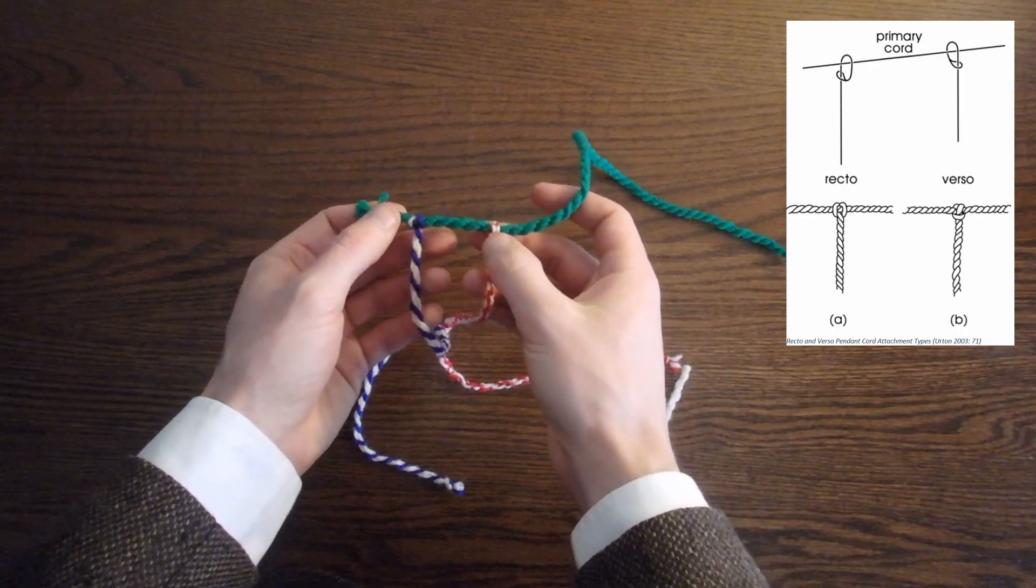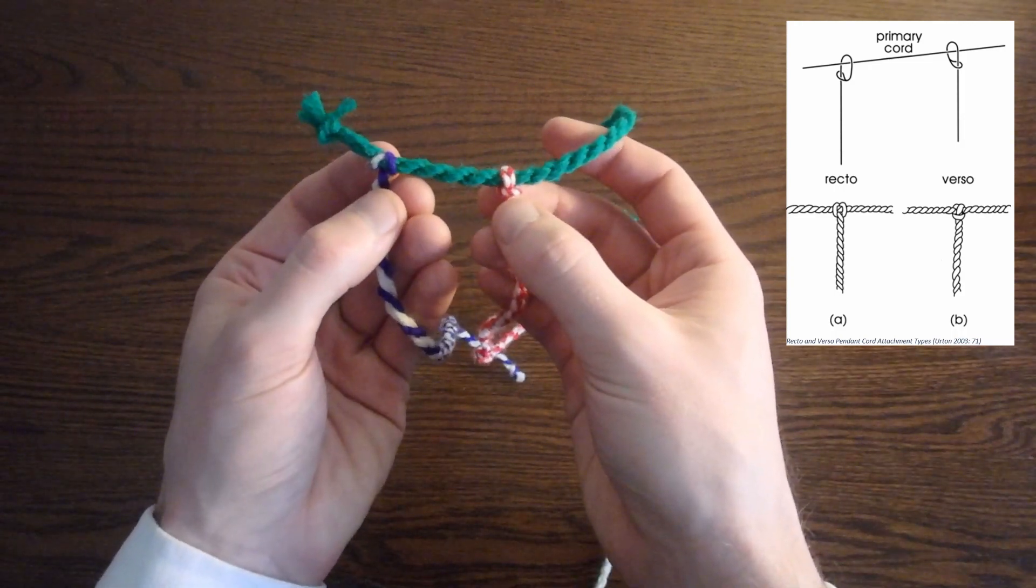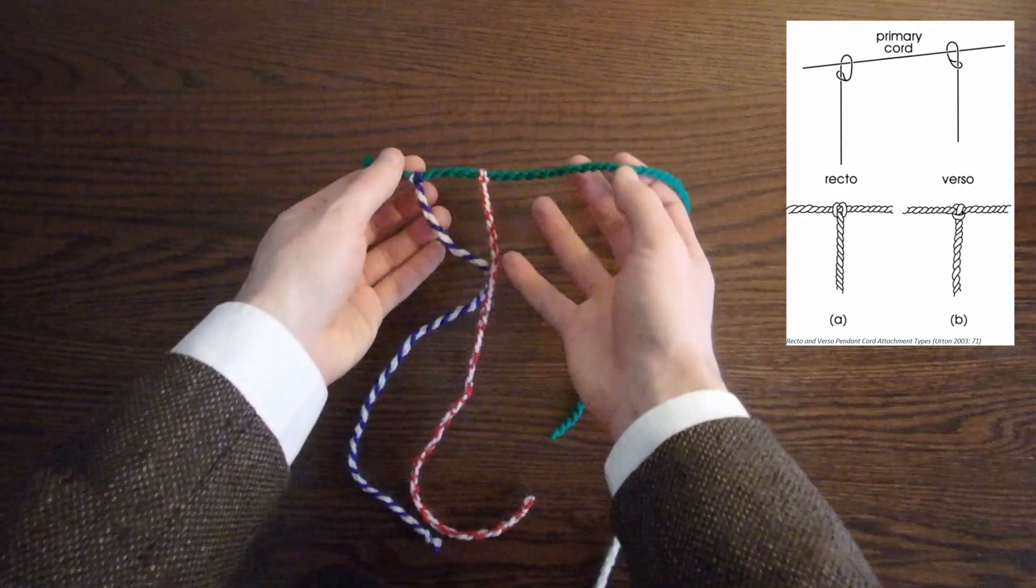In this case, we can see the loop is on the same side of the primary cord as I am, and thus it's been attached in the verso direction.